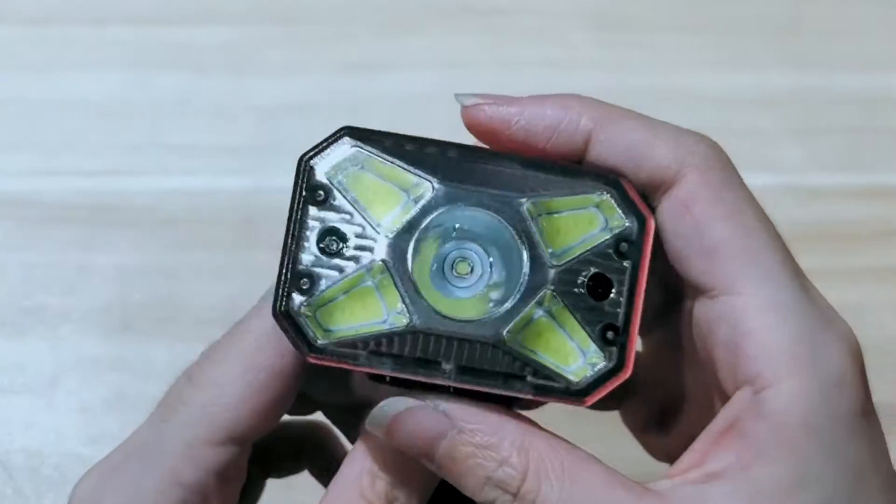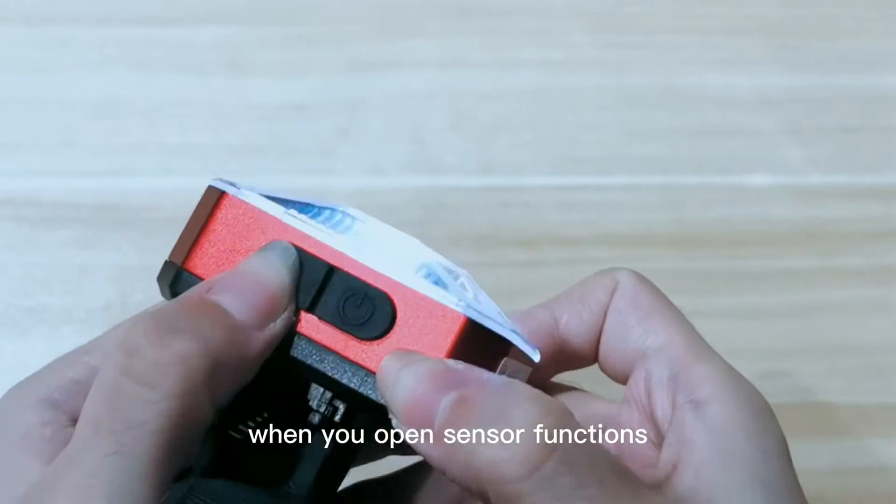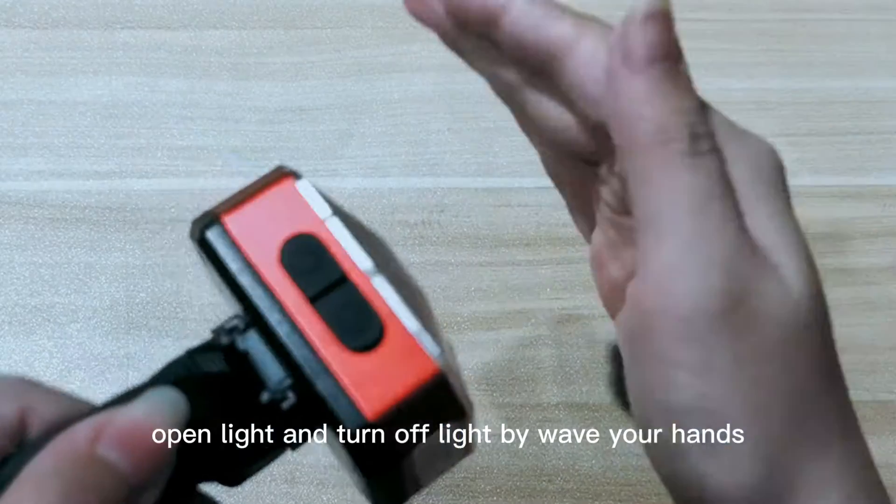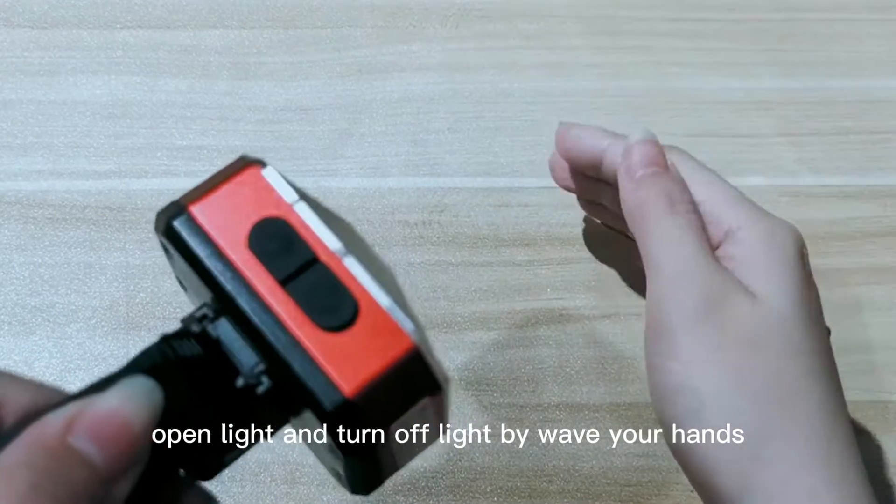And off. We also have another sensor function. When you open the sensor function, you can turn the light on and off by waving your hands.